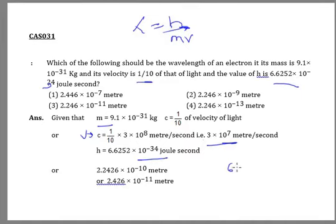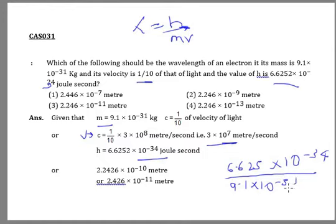Now I will substitute. This will be 6.625 × 10^-34 upon m value, which is 9.1 × 10^-31, into v value, which is 3 × 10^7.